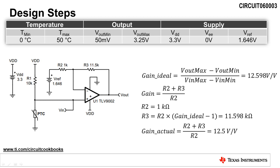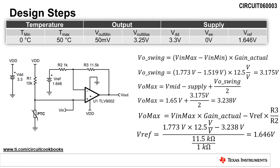Since our ideal gain cannot be realized with standard resistors, we need to calculate the actual gain we will get using standard resistor values. The actual gain of our circuit is calculated as 12.5 volts per volt. Next, we need to calculate the output voltage swing based on the actual gain of the circuit. The output voltage swing is calculated as the maximum input voltage minus the minimum input voltage multiplied by the actual gain, giving a result of 3.175 volts.